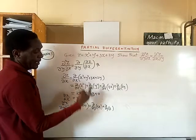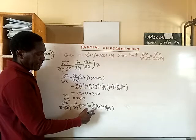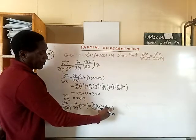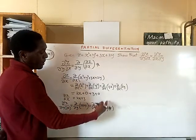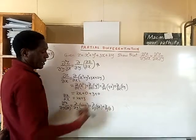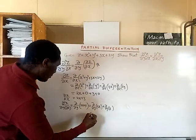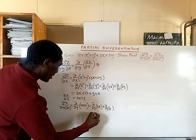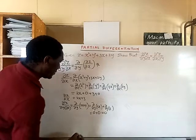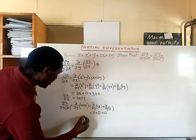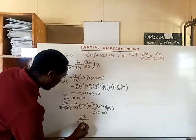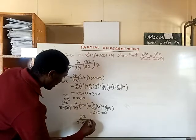Since 3x is a constant as far as the partial derivative with respect to y is concerned, and 3 is also a constant with no y present, the whole expression gives us 0 + 0 = 0. So the second partial derivative of z with respect to y after doing it with respect to x gives us 0.